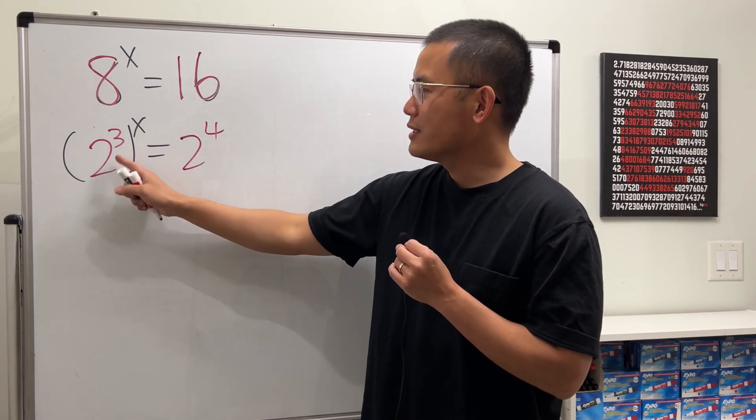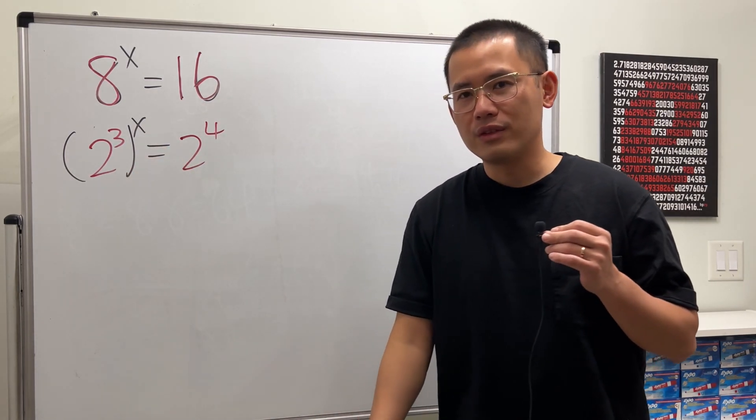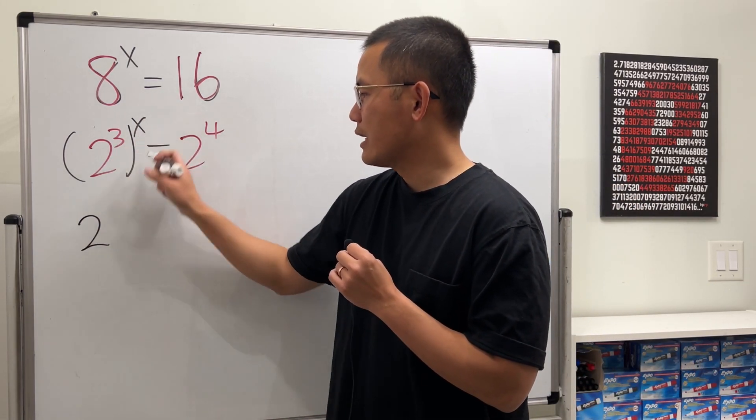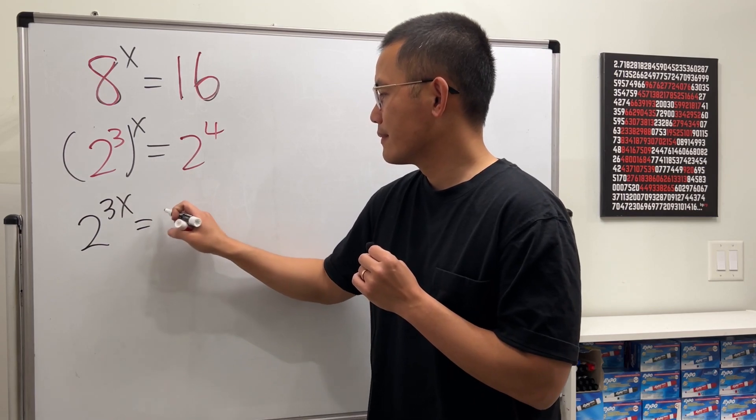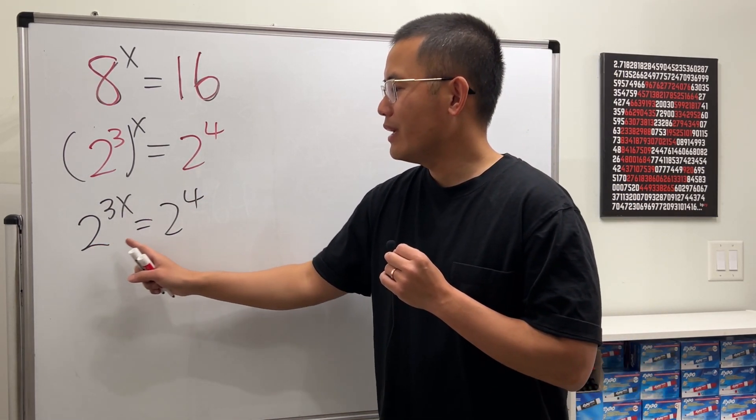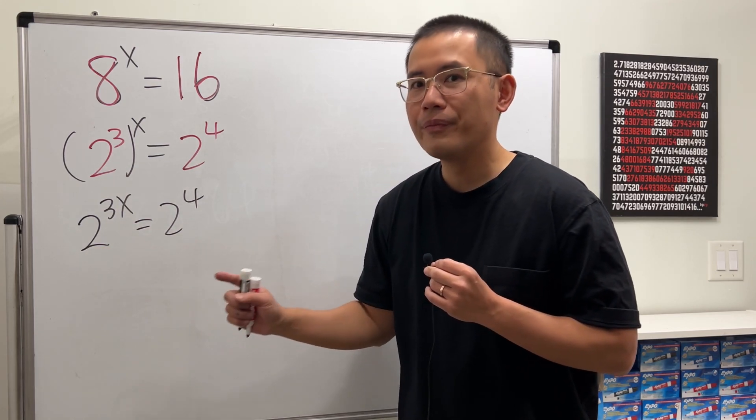Now, 2 to the third power to the x power by one of the rule of exponents. We can multiply the powers. So this is just 2 to the 3 times x. Have a look. Here we have the bases equal to each other.